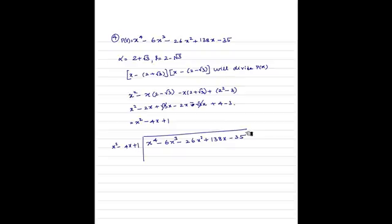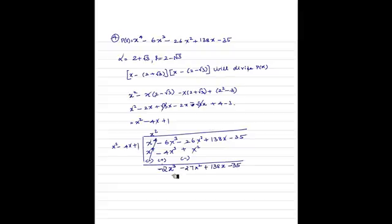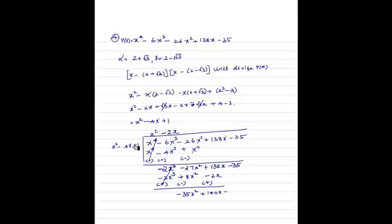Dividing: x to the 4 divided by x squared gives x squared. Multiplying x squared by (x squared minus 4x plus 1) gives x to the 4 minus 4x cubed plus x squared. Subtracting, x to the 4 cancels, leaving minus 6x cubed plus 4x cubed equals minus 2x cubed, and 16x squared minus 8x squared gives a remainder continuing. Next, minus 2x cubed divided by x squared gives minus 2x. Multiplying minus 2x by (x squared minus 4x plus 1) gives minus 2x cubed plus 8x squared minus 2x. Subtracting, minus 2x cubed cancels, leaving minus 27x squared minus 8x squared equals minus 35x squared, plus 138x plus 2x gives plus 140x, minus 35.